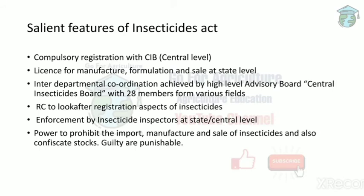The salient features of the Insecticides Act: CIB approval is compulsory — only after CIB allows it can you move to the next level. If you want to manufacture and sell or distribute insecticides, CIB permission is required. Manufacture also requires a license from state or central government. Internal departmental coordination is achieved through the Central Insecticide Board with 28 members from various fields, with a Registration Committee to look after registration aspects of insecticides.